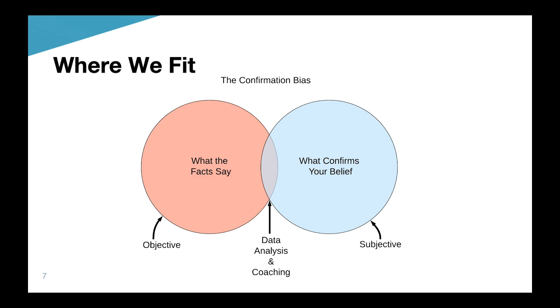Psychologically, we will look for bad if an athlete shares bad feelings, and vice versa. If you read the comments and they say 'this workout was awful,' you're going to look for the awful in that workout. Our job as coaches fits right in the middle — between objective and subjective data, between what the facts say and what confirms your belief. This is what we call confirmation bias, and we have to filter that out. If someone says this was a bad workout, we're going to go look for bad.